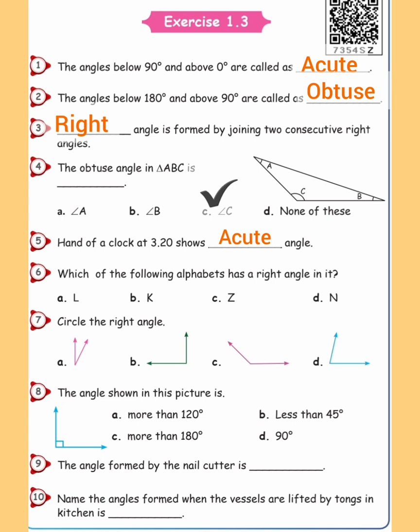Sixth question: which of the following alphabets has a right angle in it? Next, circle the right angle. If you have 4 angles, the right angle is B. B is exactly 90 degrees, so B is the answer — circle B.